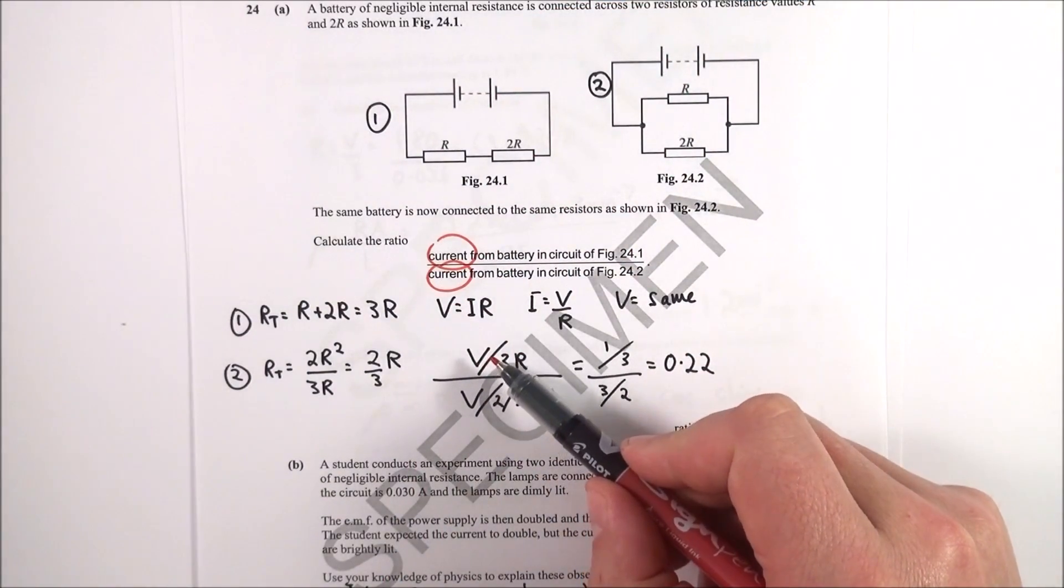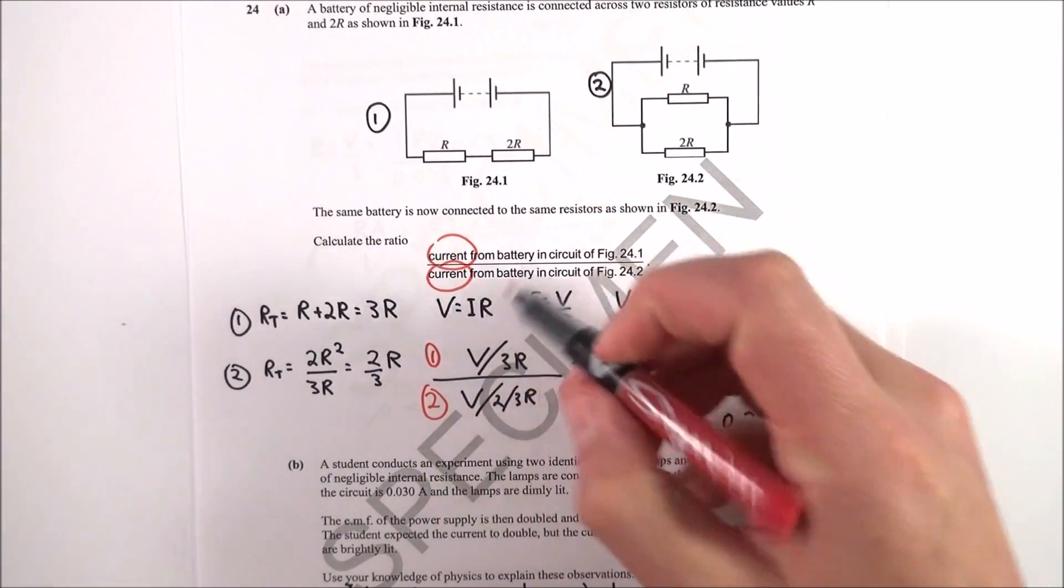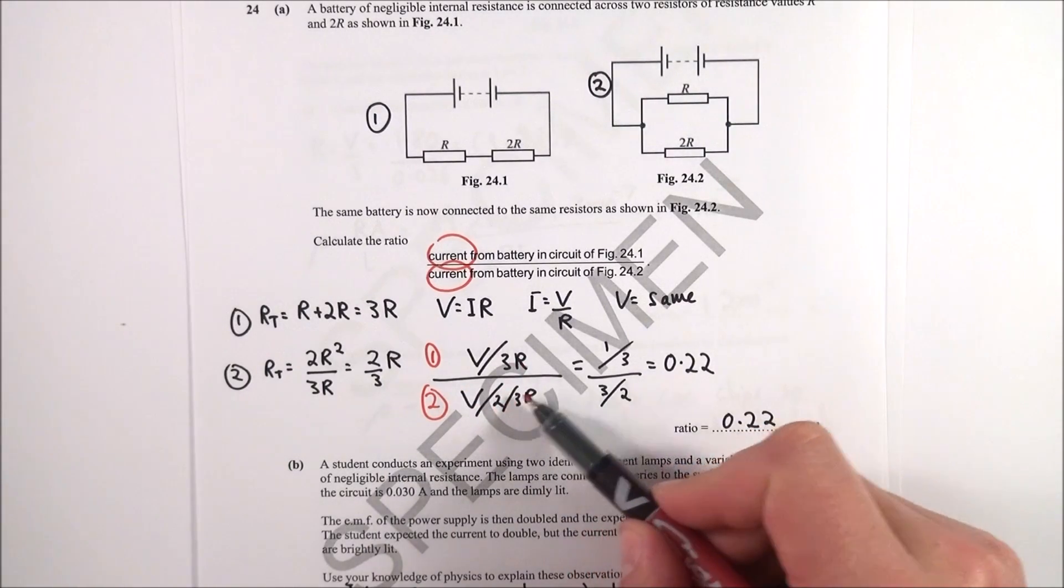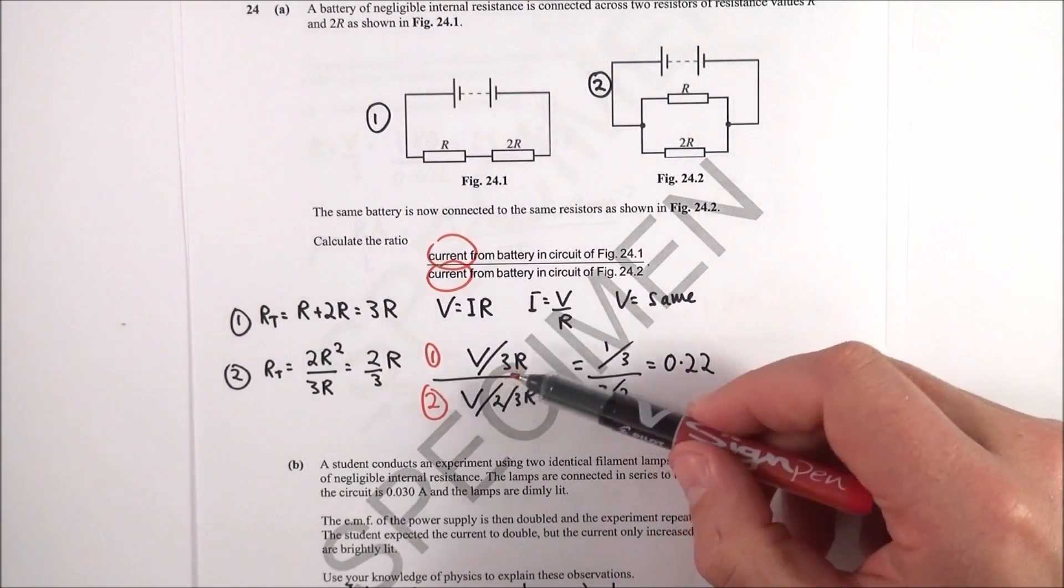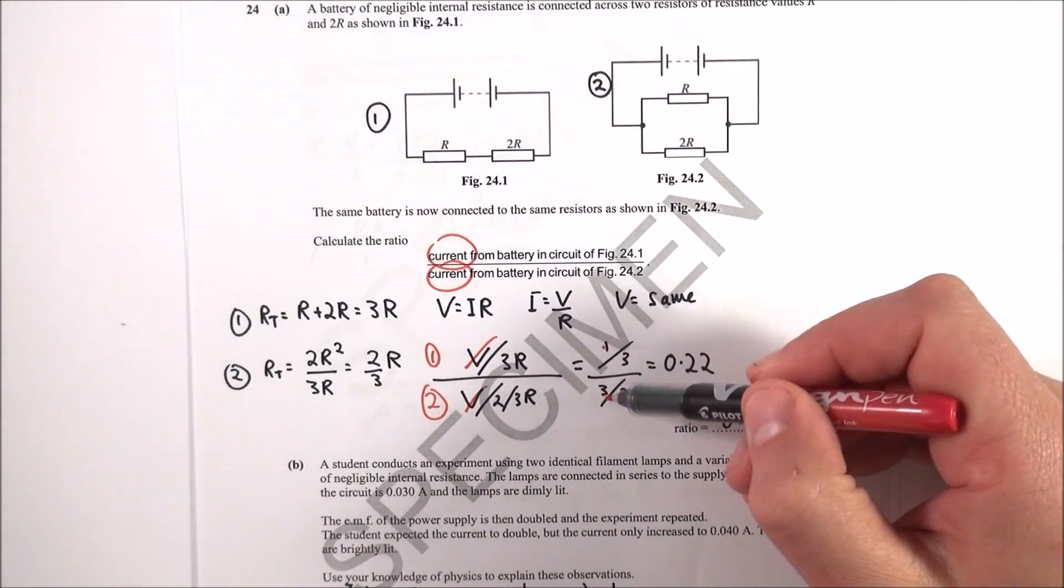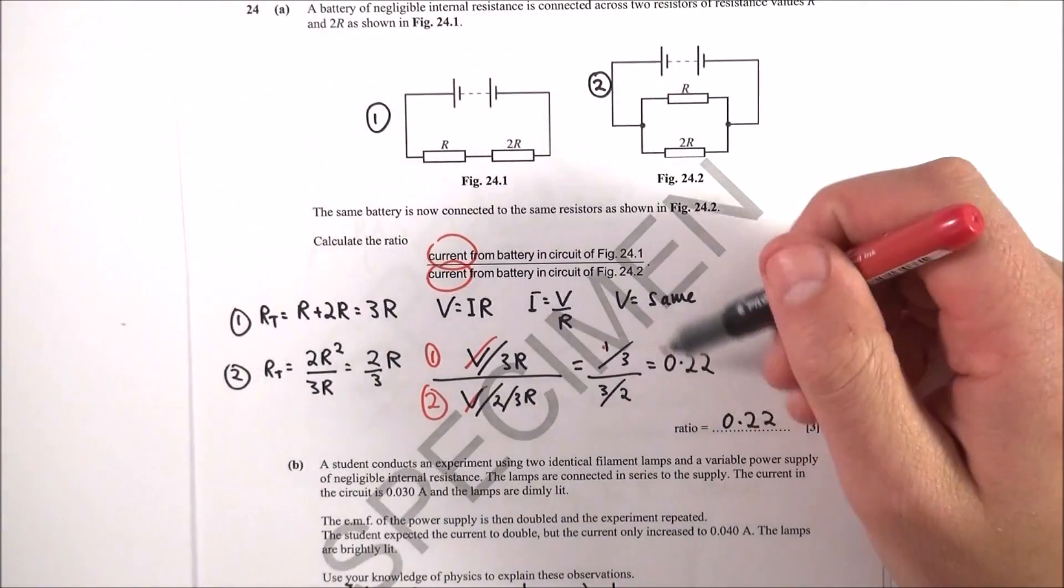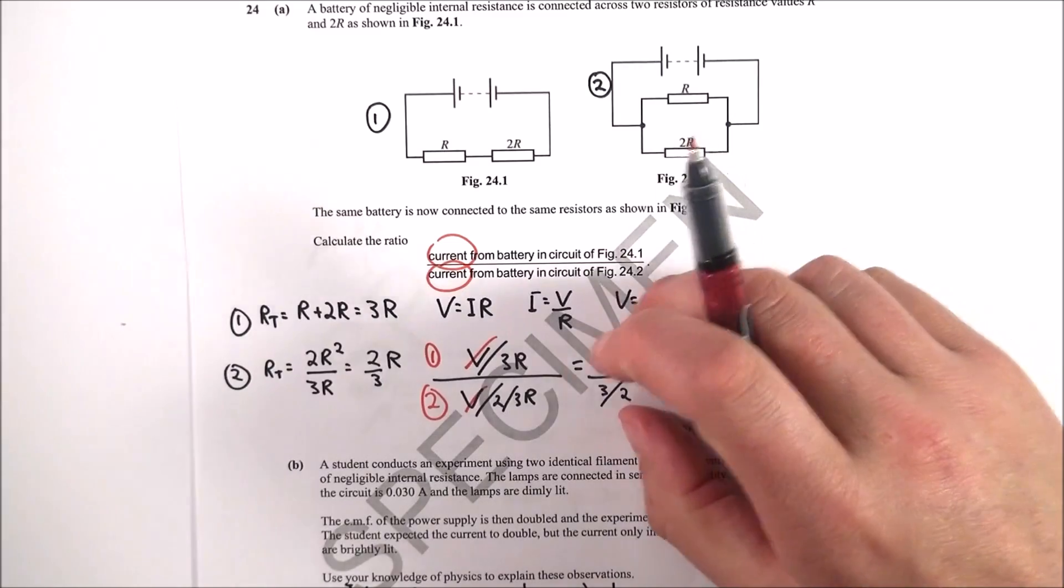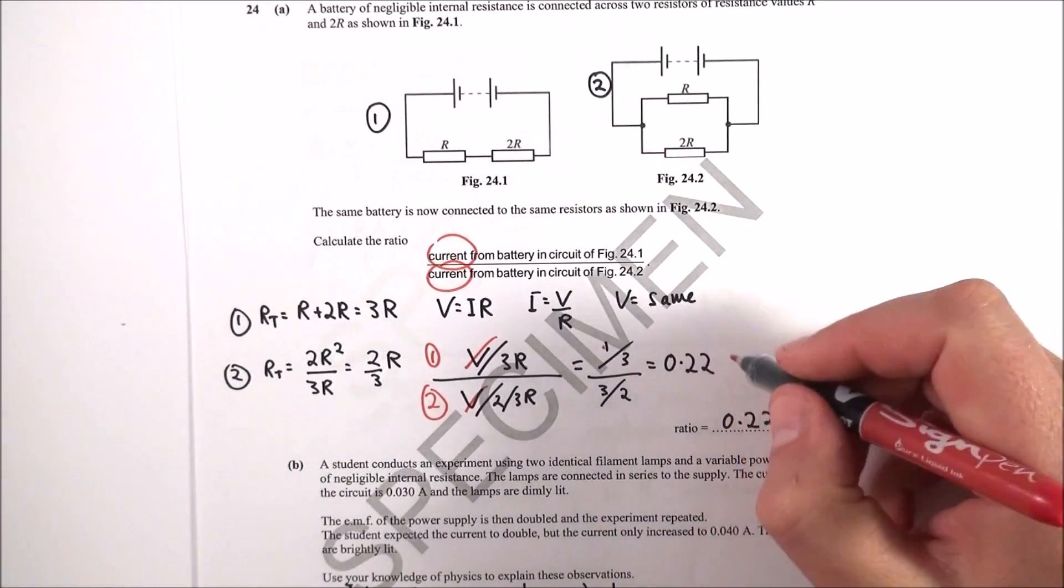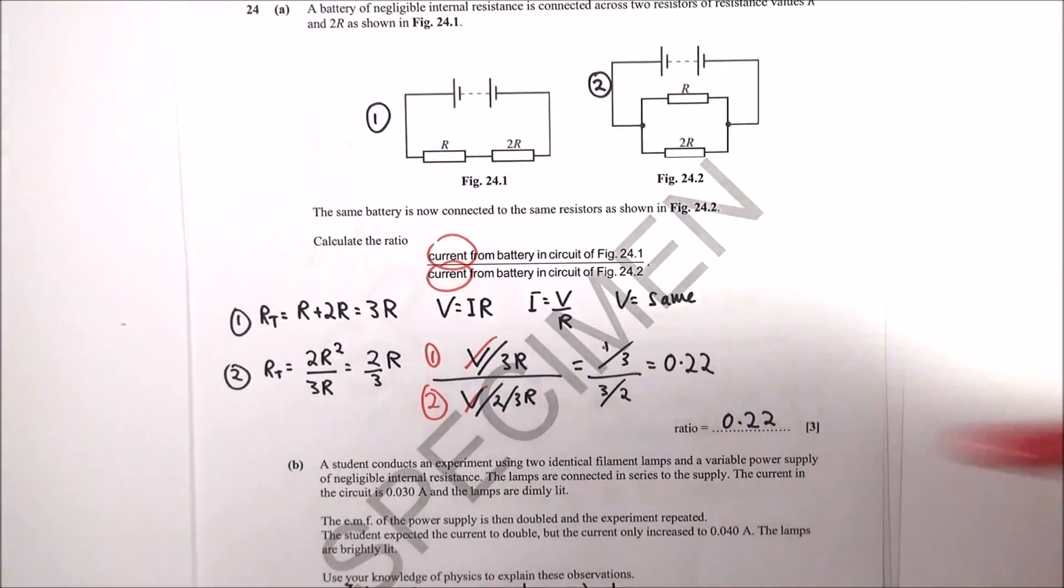So effectively the current in circuit number one, which is the one up here, we look at the ratio of one to two. One has a current of V over 3R and this one has a value of V over two-thirds R. So effectively the V's cancel and then you've got basically a third over three over two. This is because one over two-thirds is equal to three over two. This time I just put the numbers into my calculator, so a third divided by three over two, which gave the value of 0.22, and that's the ratio.